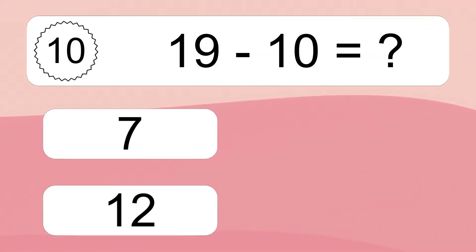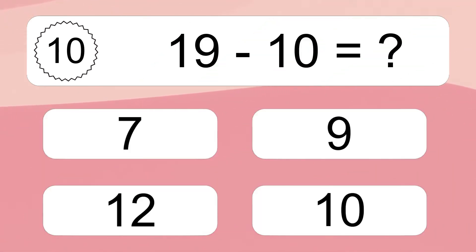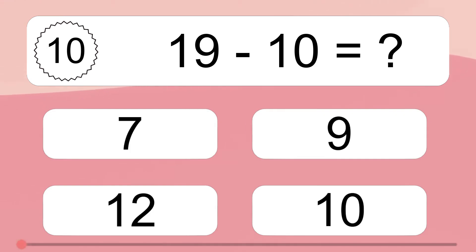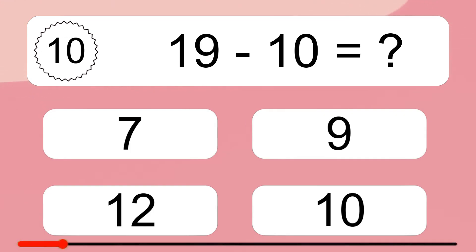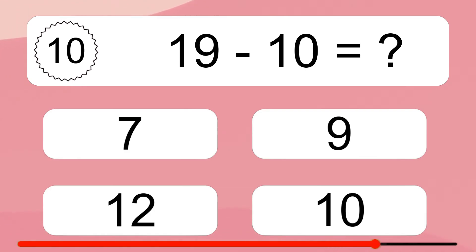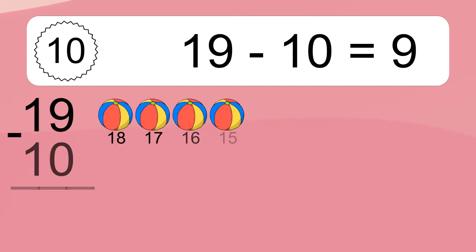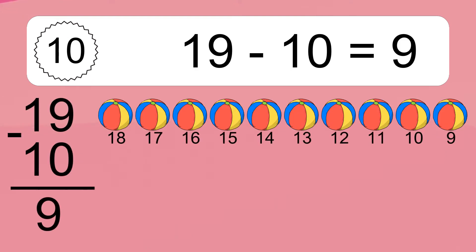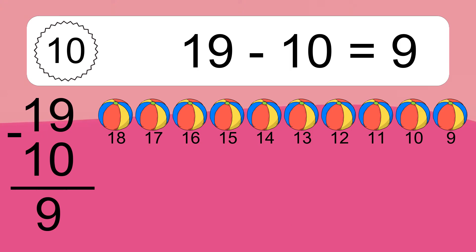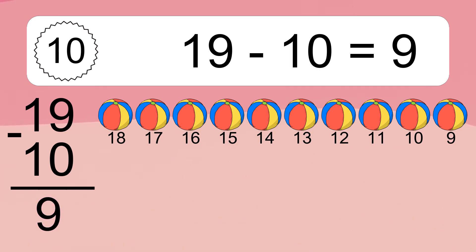19 minus 10 equals what? 19 minus 10 equals 9. Let's count it: 18, 17, 16, 15, 14, 13, 12, 11, 10, 9.